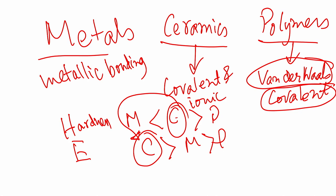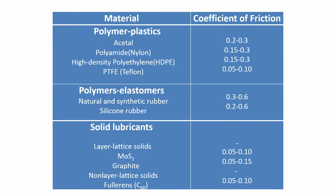Friction and wear do not depend only on hardness or elastic modulus — they also depend on the chemistry of the surfaces, like chemical composition. Therefore hardness or elastic modulus cannot be considered as the sole parameters for determining friction and wear of a particular mating couple. Coming to this slide, polymers like acetal, polyamide, nylon, HDPE, and PTFE have a fairly low coefficient of friction, mostly less than 0.3.